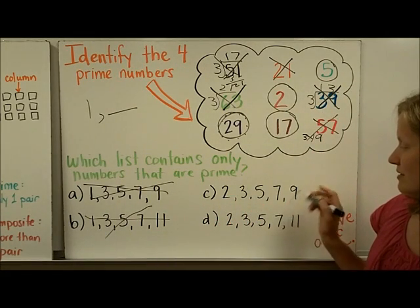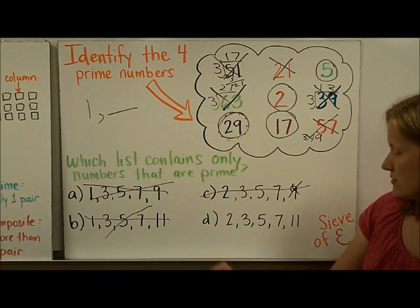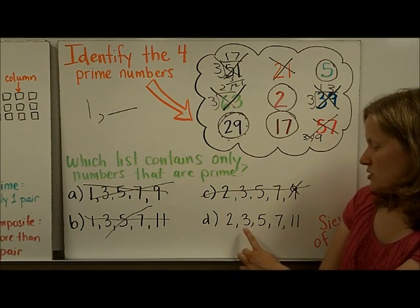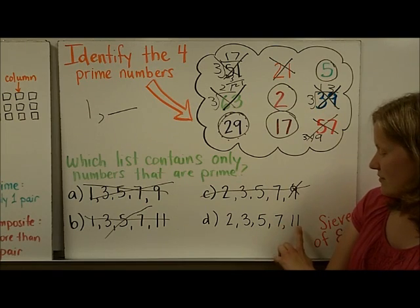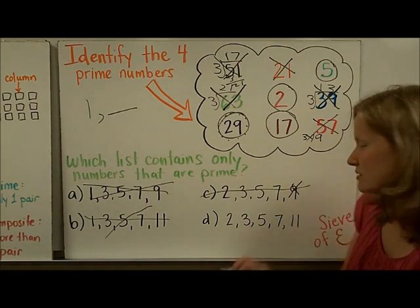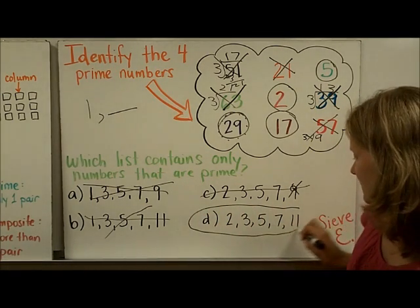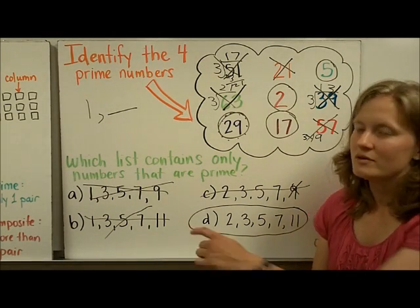2, oh, there's that composite number, 9. So that's out. 1 times 2, 1 times 3, 1 times 5, 1 times 7, 1 times 11. That looks like it might be it. Awesome. There are no composite numbers in this list.